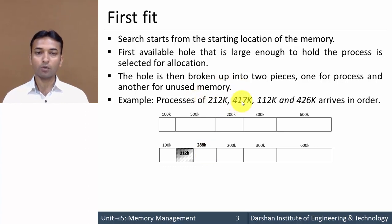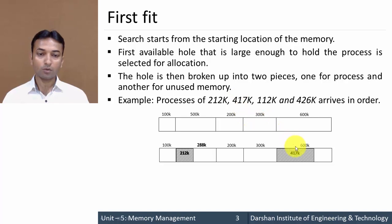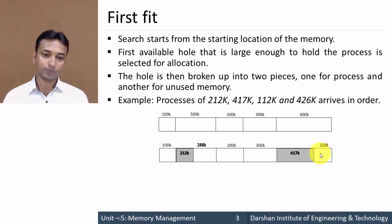Now for the second process of 470 KB, the algorithm starts again from the beginning. The first partition is not enough, the second partition's remaining 288 KB is not enough, the third and fourth are also not enough. The fifth partition of 600 KB is large enough to hold this process, so the process is placed there. This partition is divided into two parts: 470 KB allocated and 183 KB as unused memory.